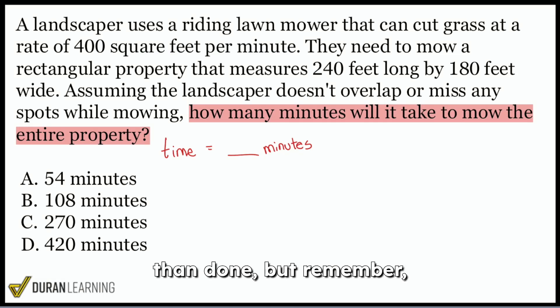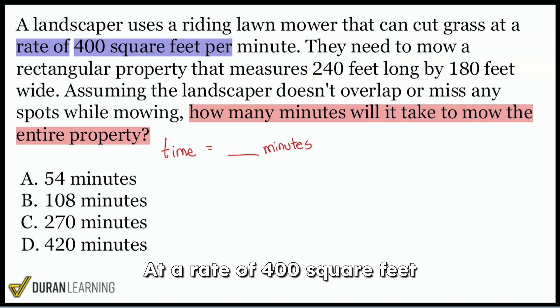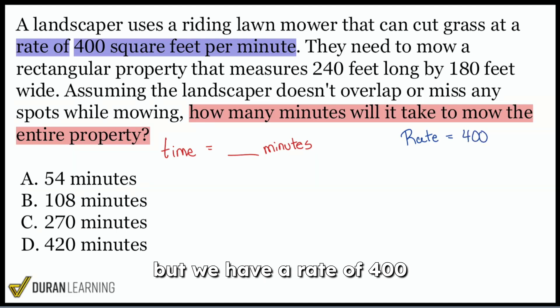I know that it's easier said than done. But remember, this needs to be part of your recurring practice if you really expect yourself to make progress day by day. So let's go ahead and get into it, my party people. We see that it says a landscaper uses a riding lawnmower that can cut grass at a rate, ooh, that's a nice keyword, at a rate of 400 square feet per minute. So okay, I can definitely identify that. I don't know how this is going to be used yet.